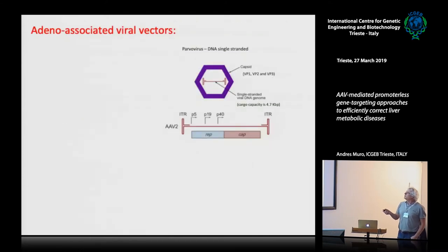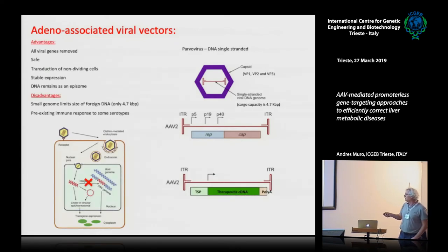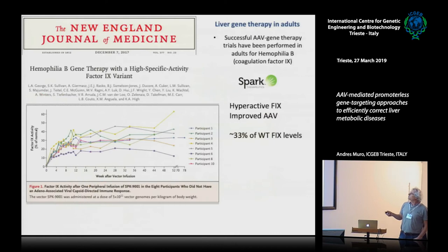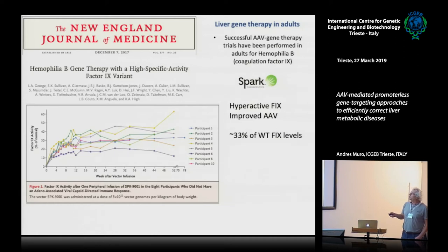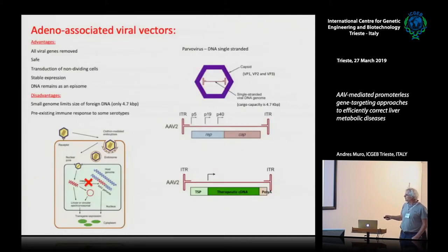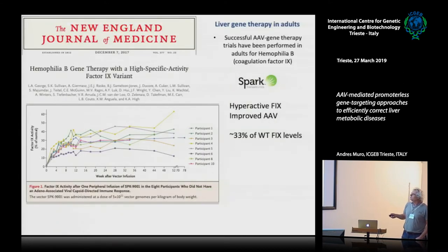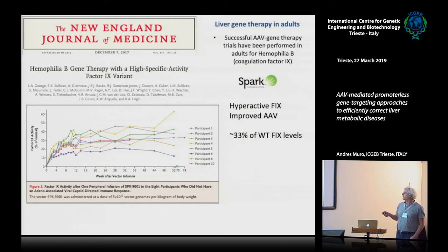We discussed adeno-associated viruses, which are parvoviruses in which the viral genes are replaced by our therapeutic cassette. This approach has been used for hemophilia B, in which a cassette with a liver-specific promoter driving the Factor IX cDNA was infused into patients with very good results, achieving Factor IX levels averaging around 30%, which is more than enough to avoid infusion of recombinant factor to all treated patients.